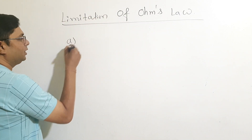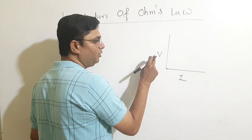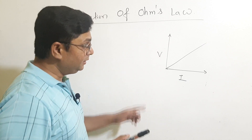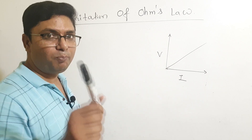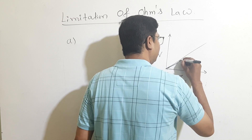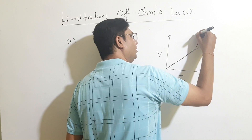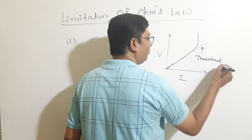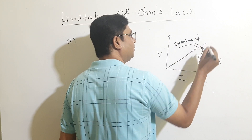For the first limitation, consider an IV graph with I on the x-axis and V on the y-axis. We know that for Ohm's law the graph should be a straight line. But for a metallic conductor, it will only be a straight line theoretically. If you practically draw the graph, it follows a straight line for a short distance, and after that the graph becomes a curve. This is the theoretical graph versus the experimental graph.